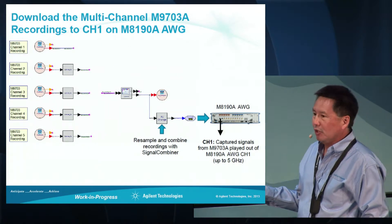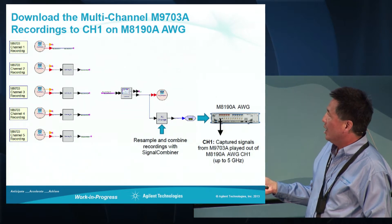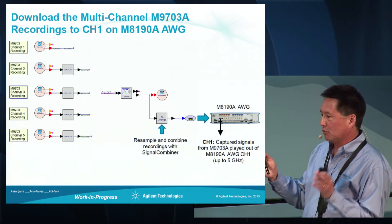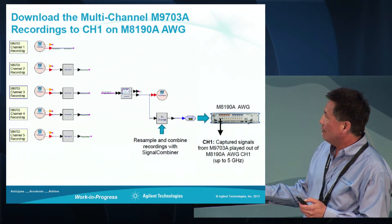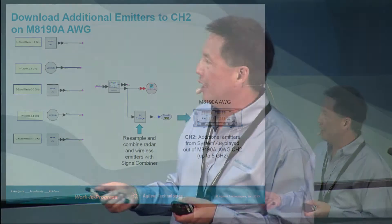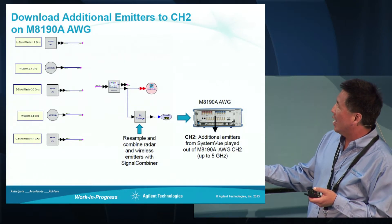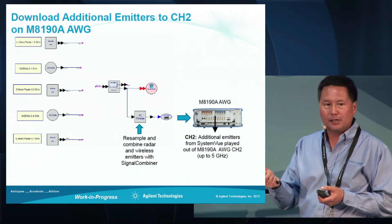This AWG is a two-channel AWG. Previously we showed generating I and Q on those two channels to generate a 10 GHz signal. In this case, we're going to use the 5 GHz bandwidth of the AWG to download one signal to channel one and a completely different signal to channel two. Channel one is playing back the captured signals. On channel two we're creating emitters in simulation: an L-band radar signal, WCDMA signal, S-band radar signal, another WCDMA signal, and a C-band radar signal. These are resampled and the output is downloaded to channel two.